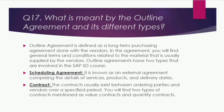The next question is: what is meant by an outline agreement and its different types? An outline agreement is a long-term purchasing agreement done with vendors, containing general terms and conditions related to materials usually supplied by the vendor. There are two types: first, a scheduling agreement — an external agreement comprising details of services, products, and delivery dates; second, a contract — which exists between ordering parties and a vendor over a specific period and comes in two forms: value contracts and quantity contracts.